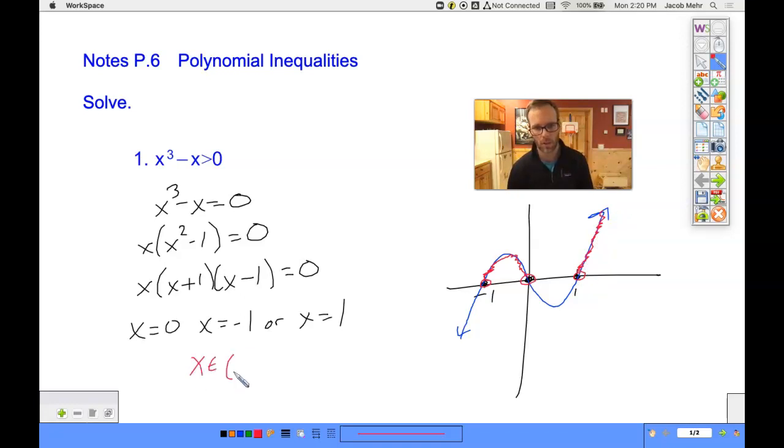So my solution would be negative one exclusive to zero, union one exclusive to infinity. That's where it's greater than zero. If it was less than zero, I'd go from there to there, and then here. If I threw in the or equal to's, then I would have some brackets instead.